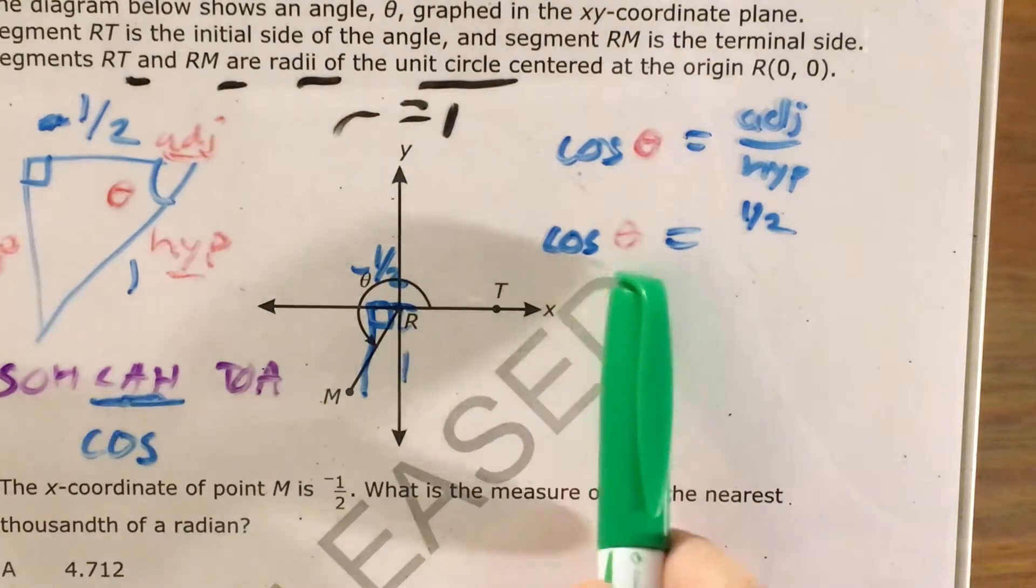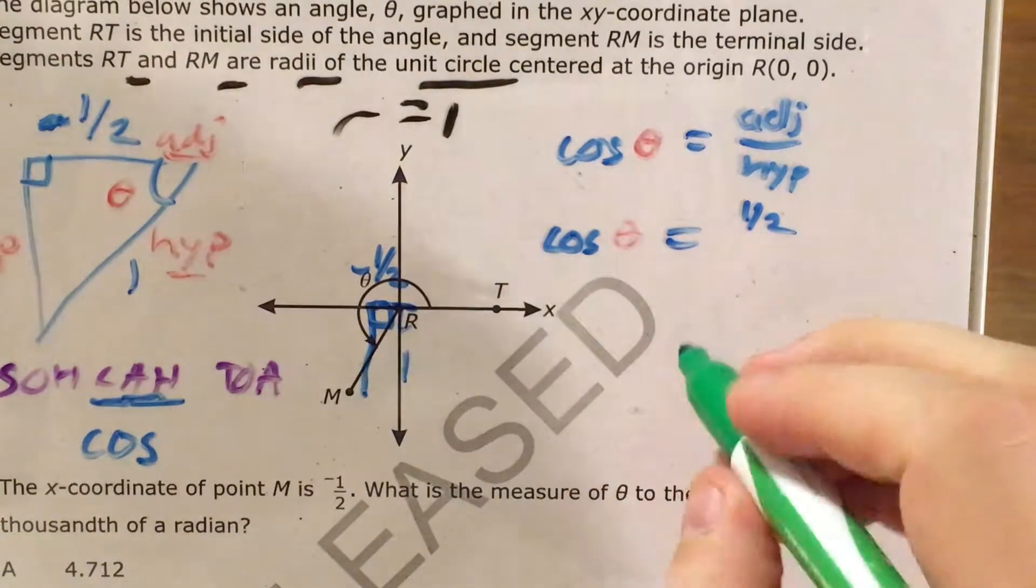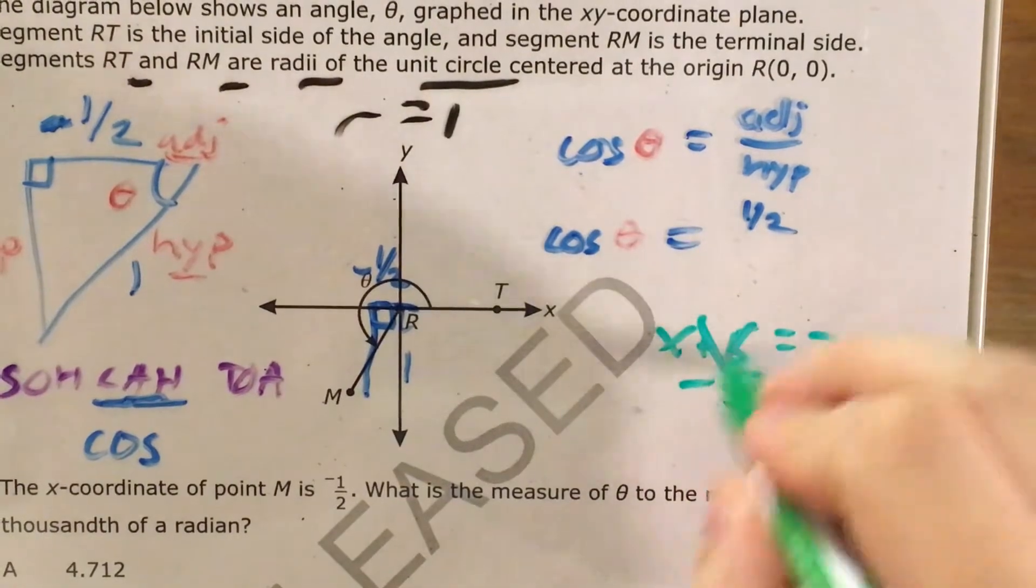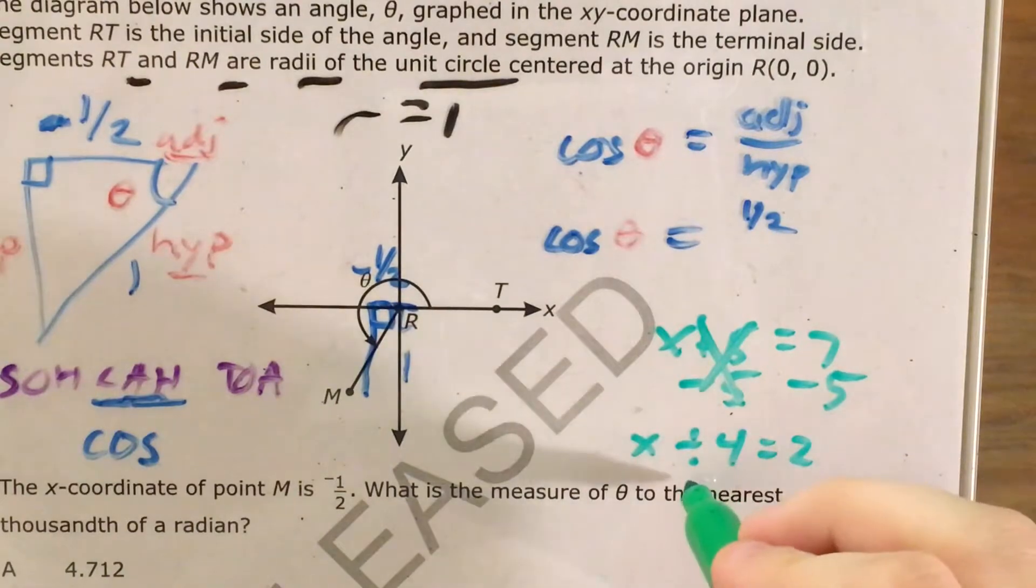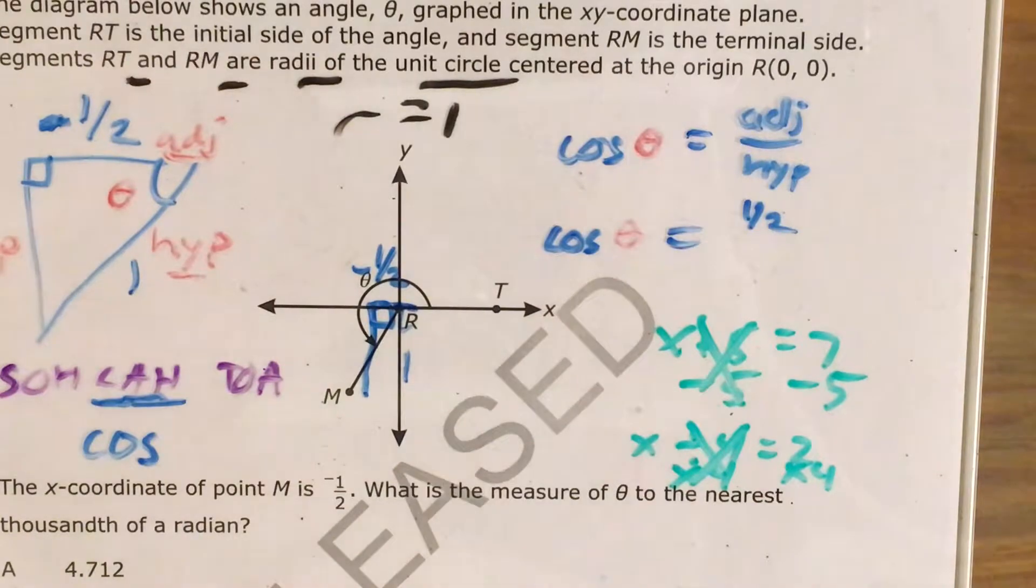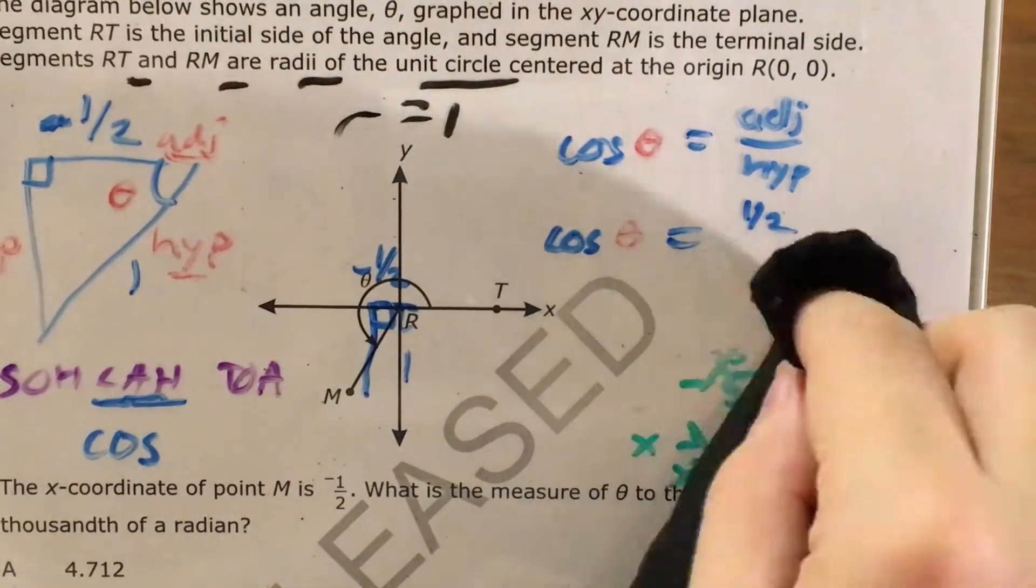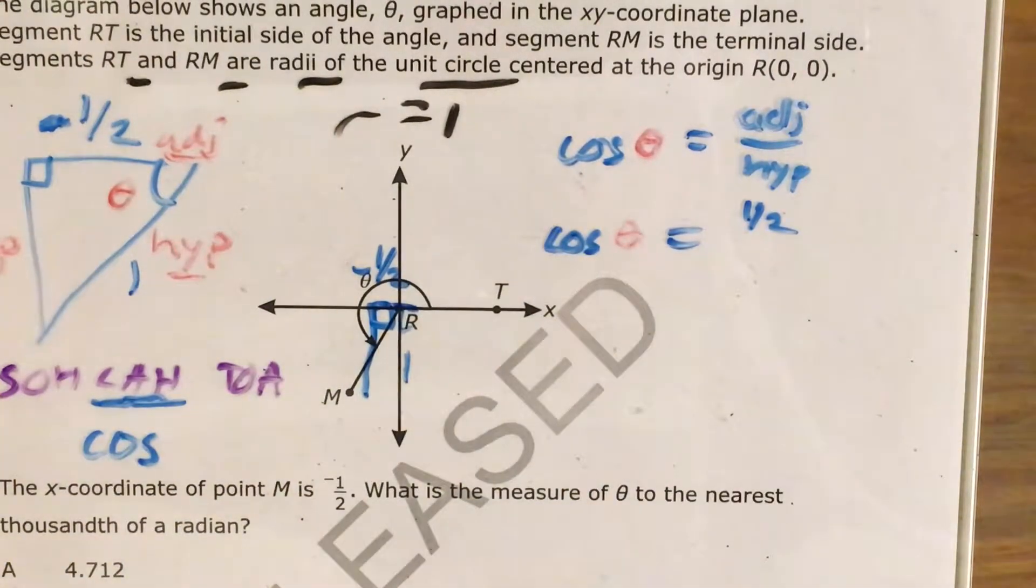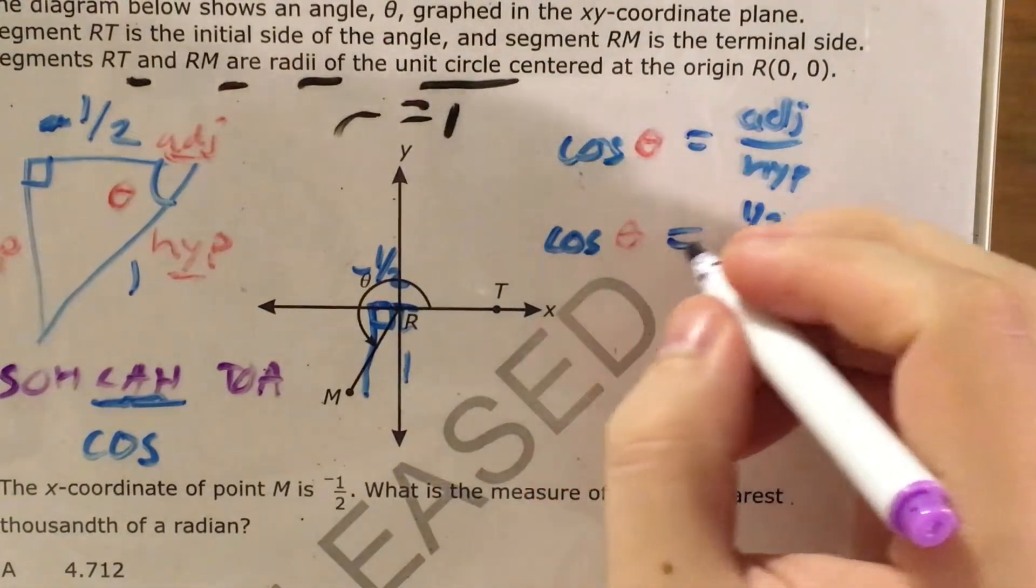Now, we have theta trapped inside cosine. If this were a regular equation, if I saw x plus 5 equals 7, I could subtract 5 from both sides. If I saw x divided by 4 equals 2, I could multiply by 4. Either way, whenever I see an equation like this, I'm looking for some inverse or opposite operation. And in fact, there is one such operation that exists for cosine. It's called inverse cosine.